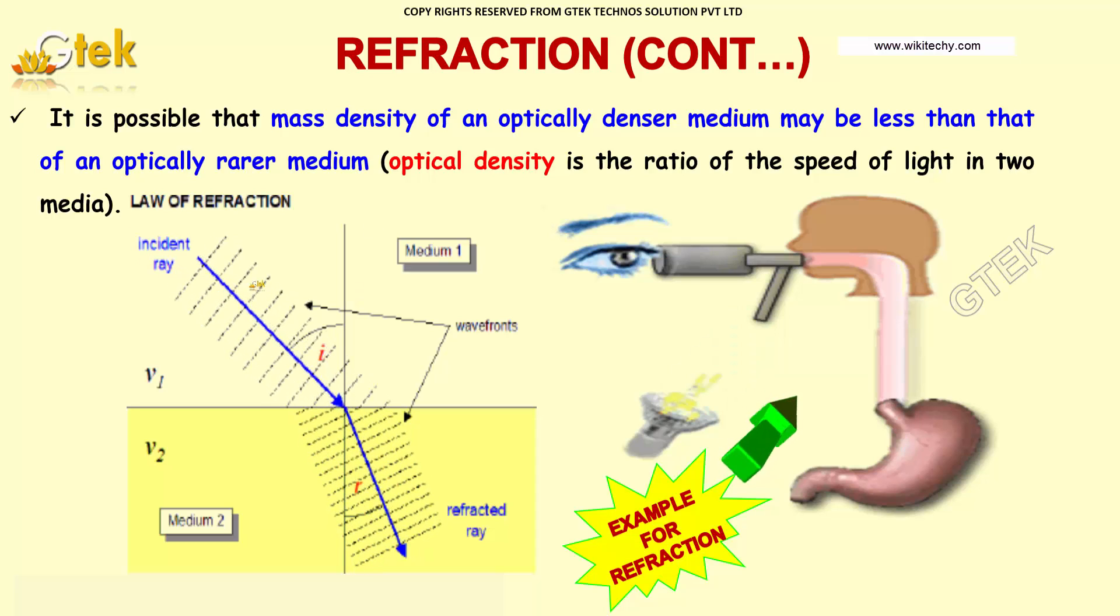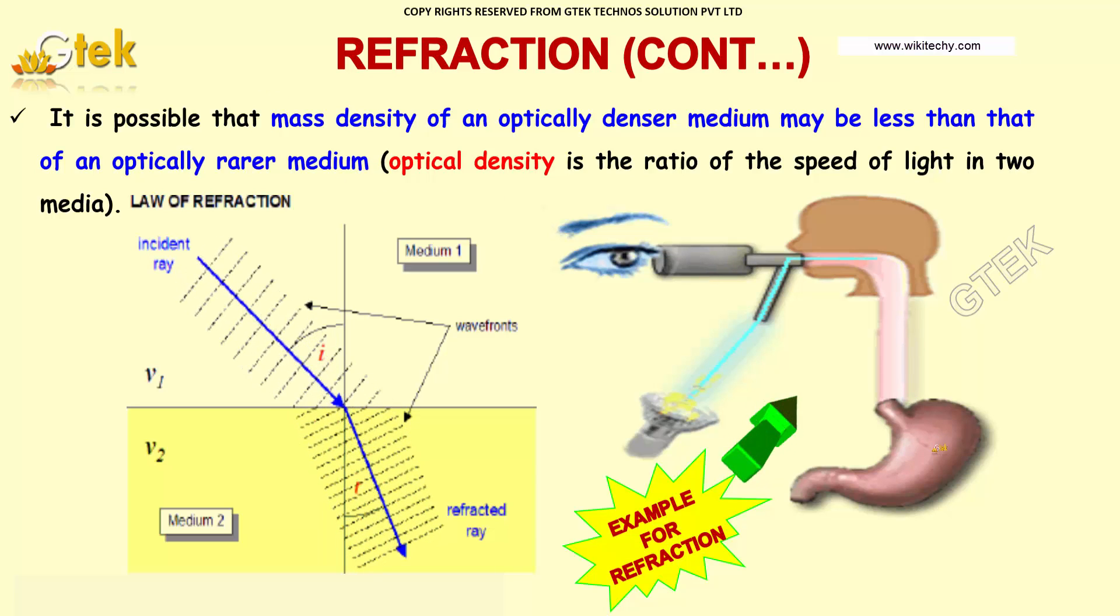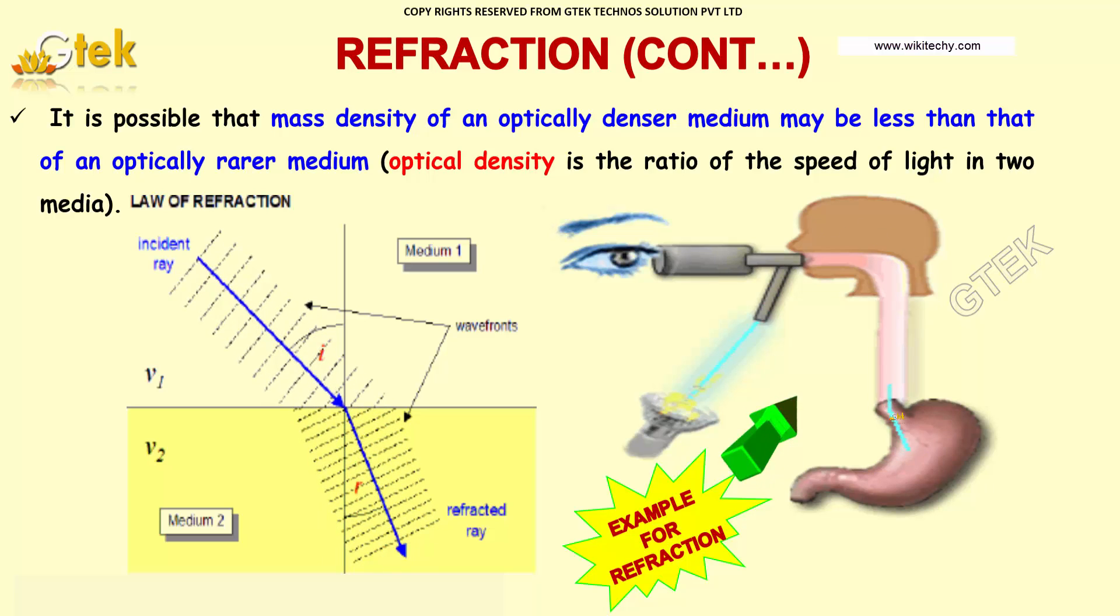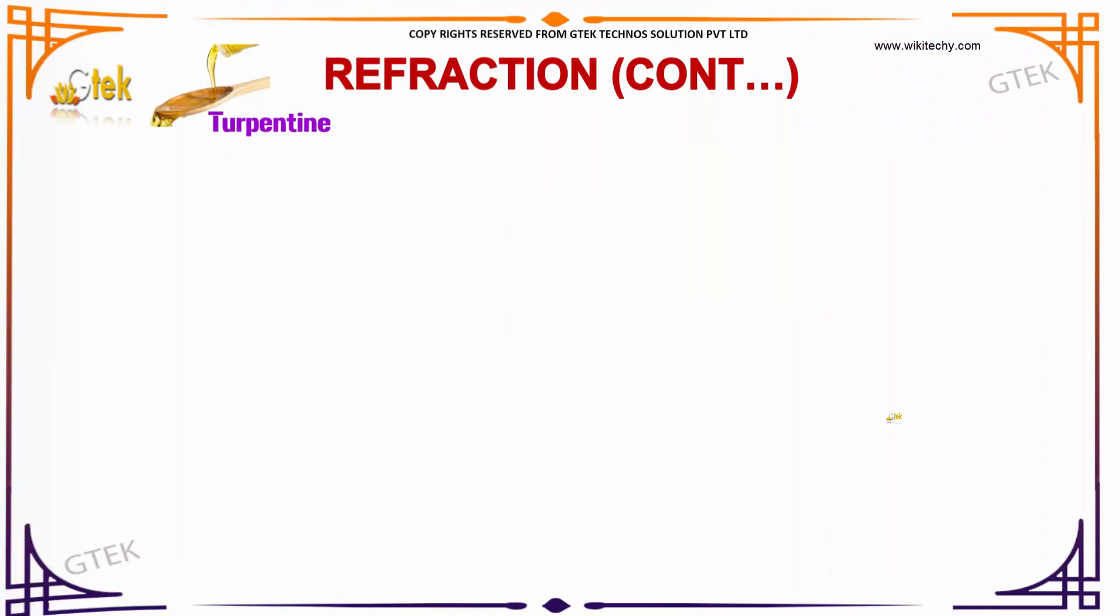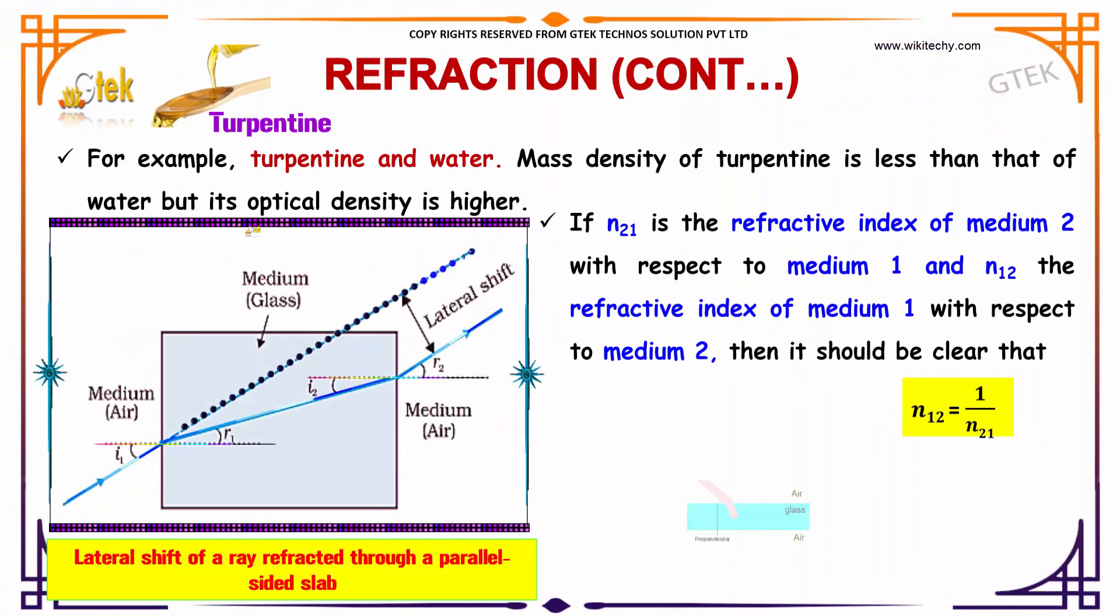I'm trying to show the refraction technique used in viewing tumors in medical field. Typical examples are turpentine and water. Mass density of turpentine is less than that of water, but its optical density is higher.